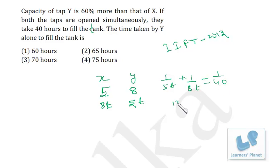So that's 8 plus 5, 13 upon 40T is equal to 1 upon 40. That means T is equal to 13. So it will take 5 into 13, 65 hours, and it will take 13 into 8, 104 hours.